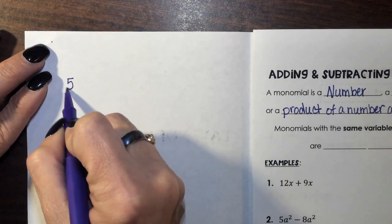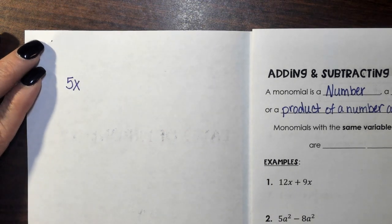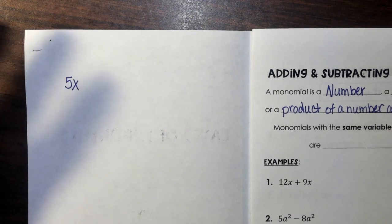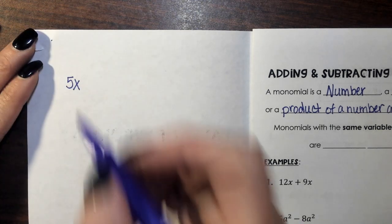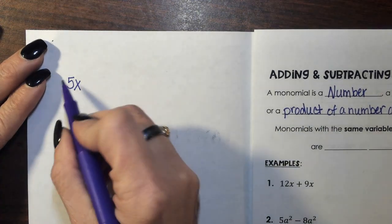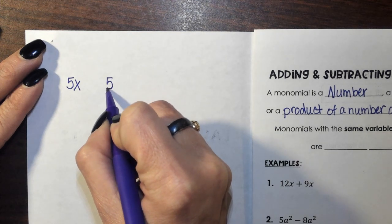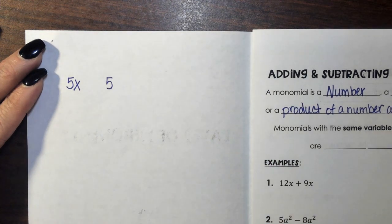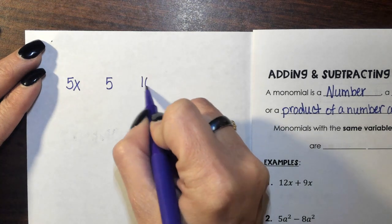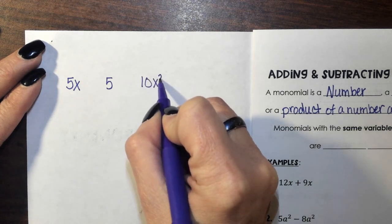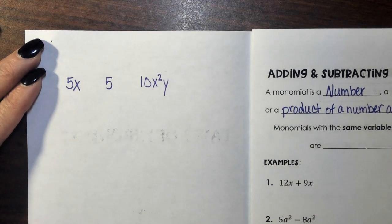5x — this is an example of a monomial. Mono, when you hear that word, you think of one, a single term. This would be the term 5x. It might just be a number — this is considered a monomial. I could say 10x squared y — that is a monomial.